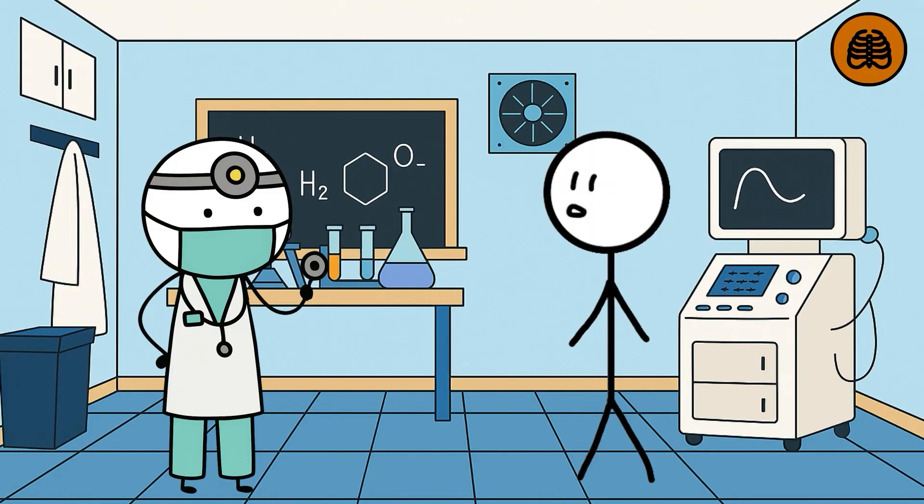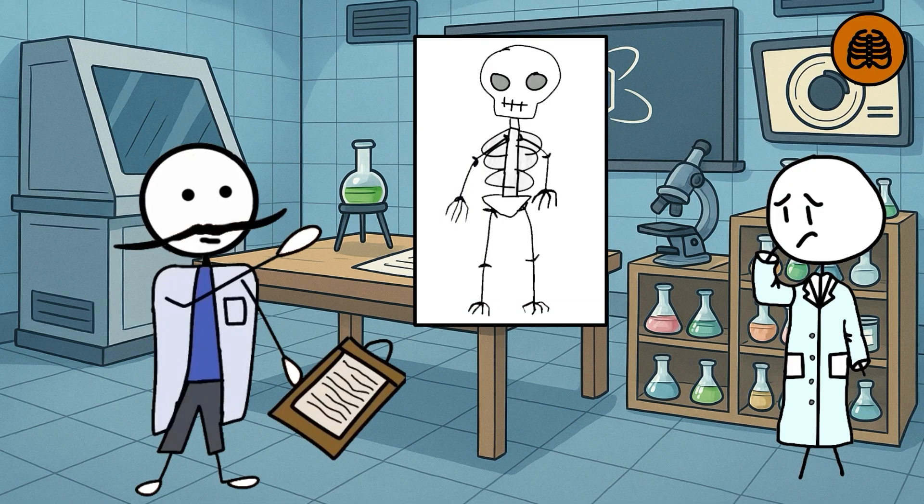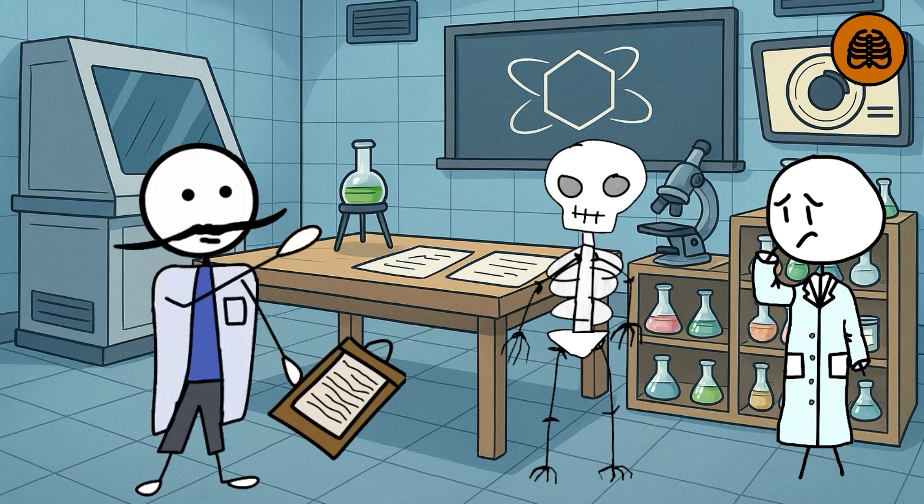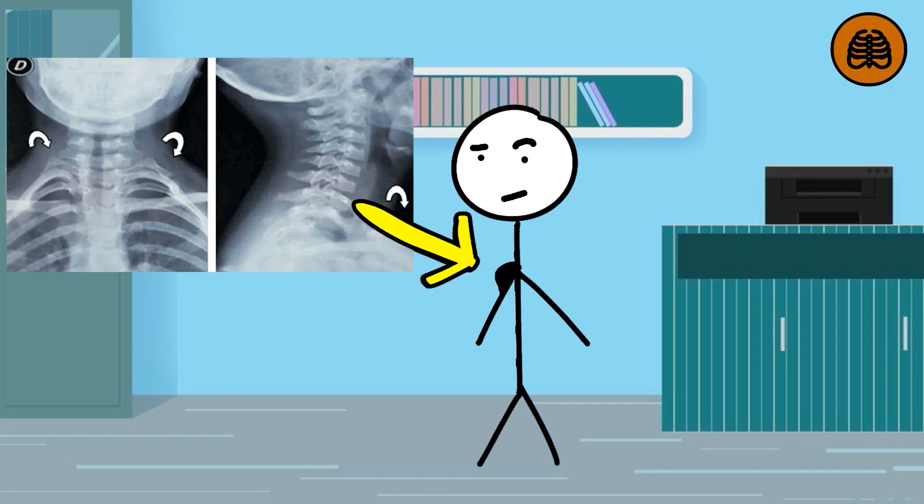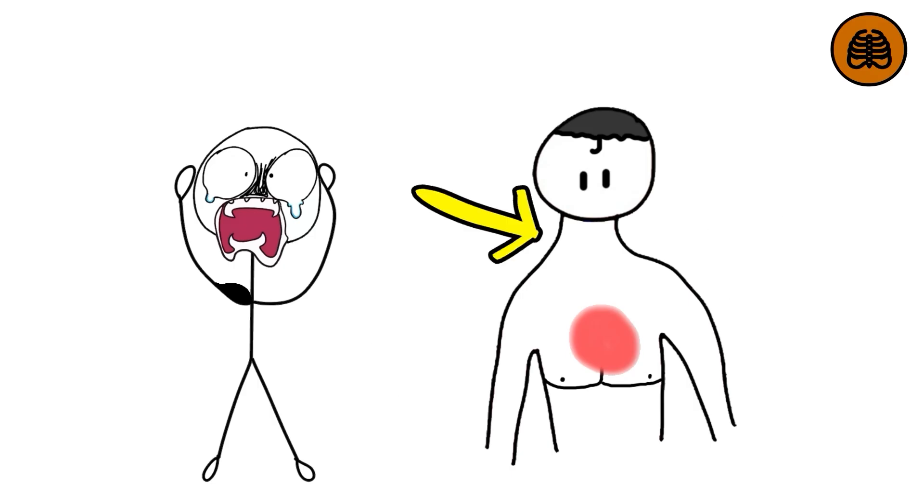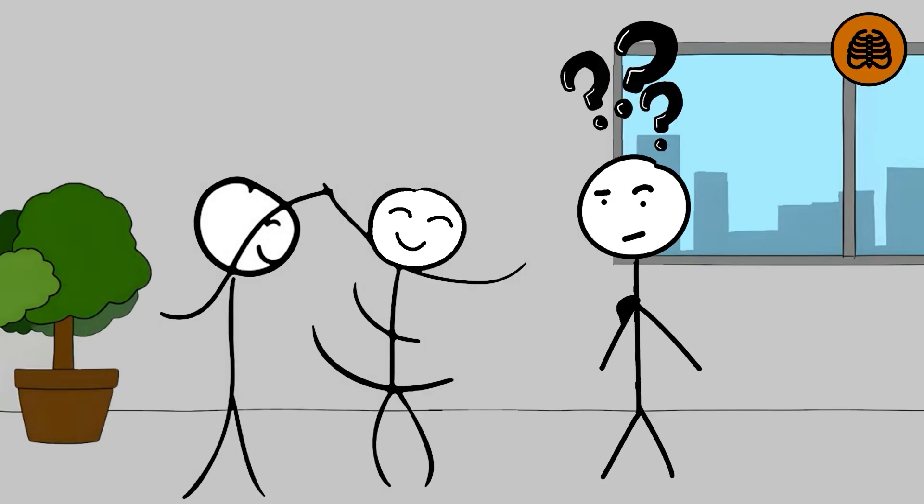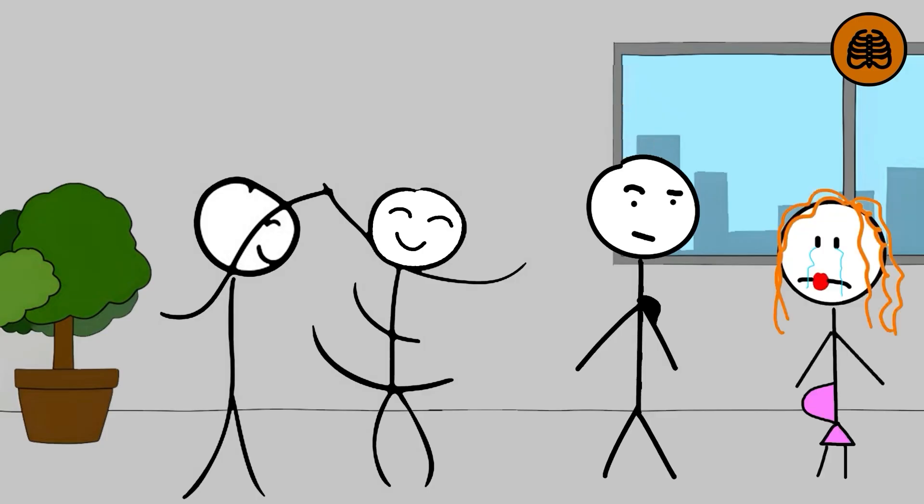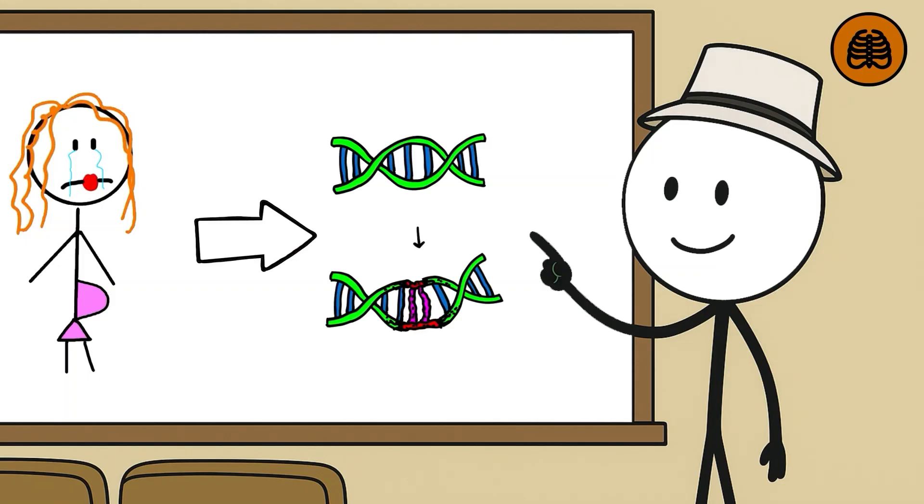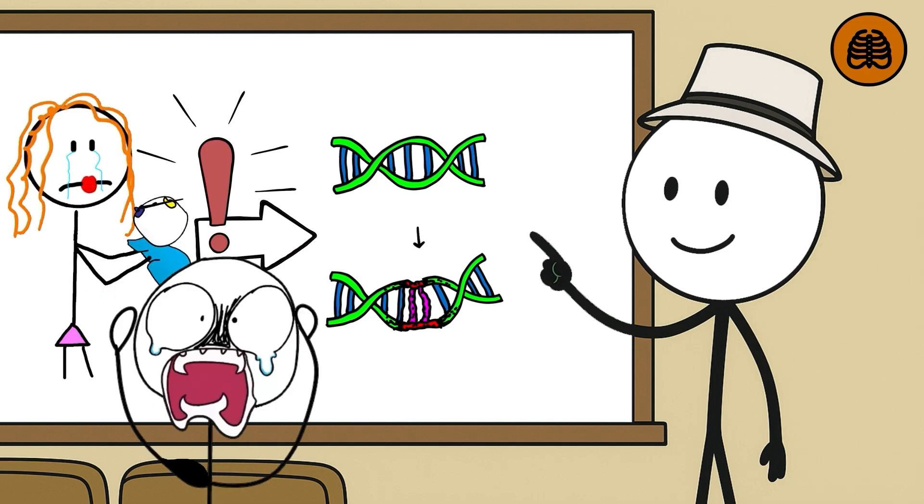The cervical rib. Not everyone is born with the same number of bones. Some people, without knowing it, have an extra rib right at the base of the neck. It is not part of the usual human skeleton design, and in many cases goes unnoticed. But when it grows too much or forms in the wrong position, it can press on nerves or blood vessels, causing discomfort in the arm, shoulder, or neck. It does not provide additional protection, nor does it improve mobility. It is simply there due to a variation during embryonic development. A small biological deviation that the body allowed, and that sometimes, years later, starts to make noise.